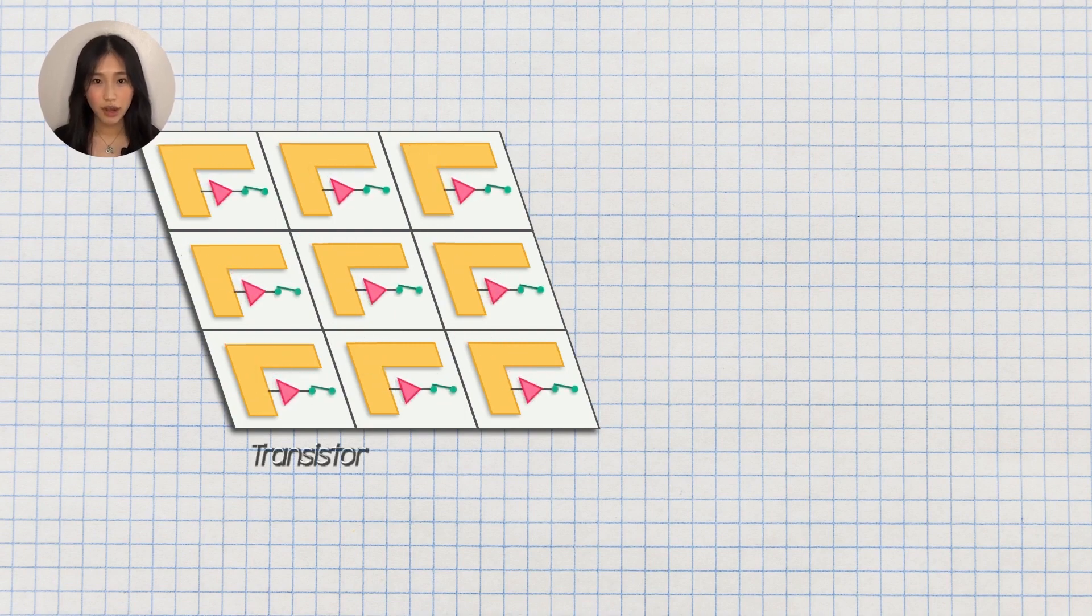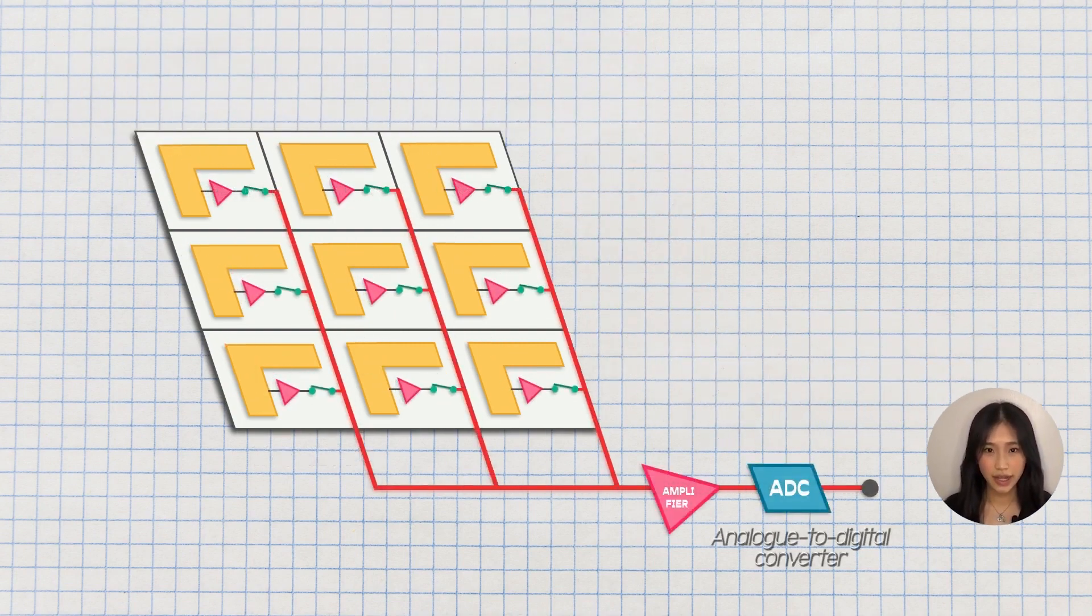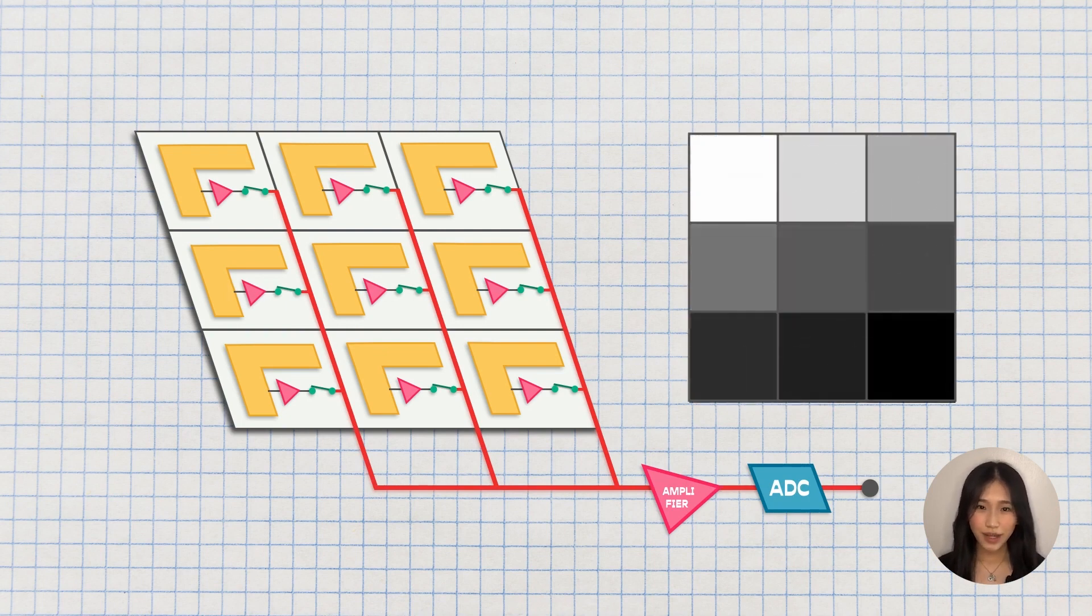Each photodiode is connected to a transistor, which feeds and amplifies the flow of charge into an ADC, with each cell in the array being assigned a binary value corresponding to the brightness. And voila! The processor constructs a grayscale image. But we're not in the 1800s.